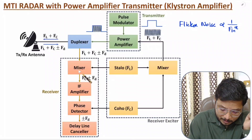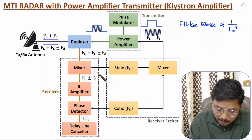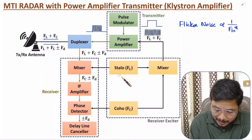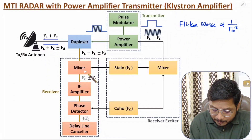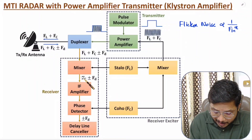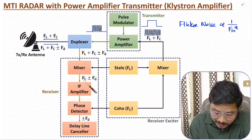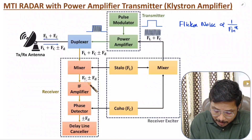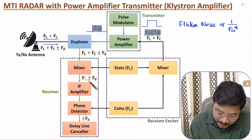In the receiver, the mixer has two inputs: the received echo signal and the stable local oscillator frequency FL. The two frequencies — FL plus FC plus or minus FD, and FL — are subtracted, eliminating FL. The output is FC plus or minus FD, which becomes the input frequency to the receiver, and because of FC the input frequency is higher, so flicker noise is lower.